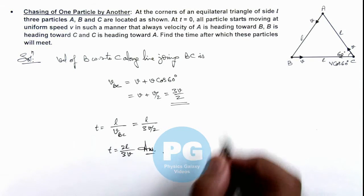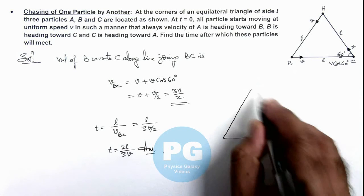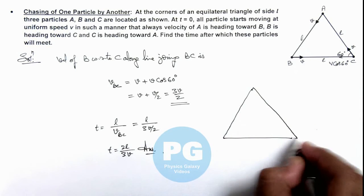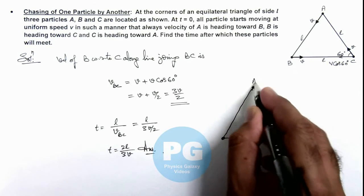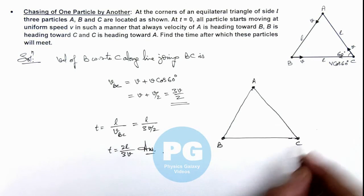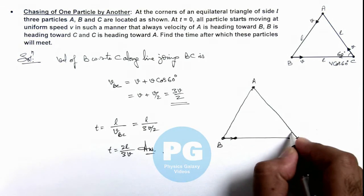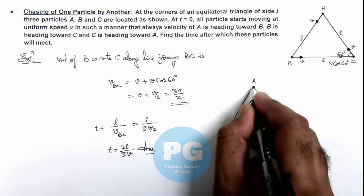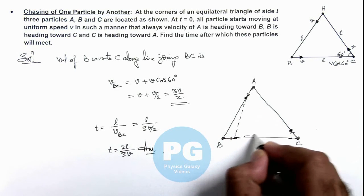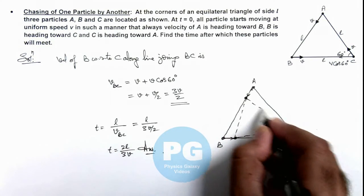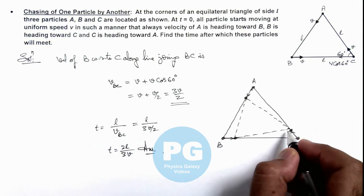And if we talk about the actual motion of these particles, here we can say, as initially these particles are at the vertices of equilateral triangle ABC, if B will slightly move toward C, C will move toward A, and A will move toward B. Then this would be the new position of the particles, and you can say still they are located at the vertices of equilateral triangle.